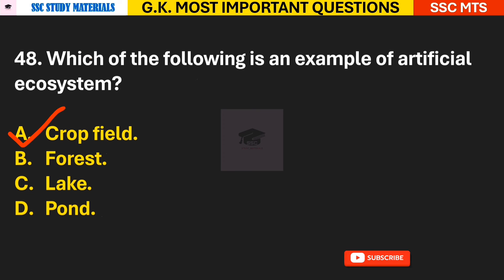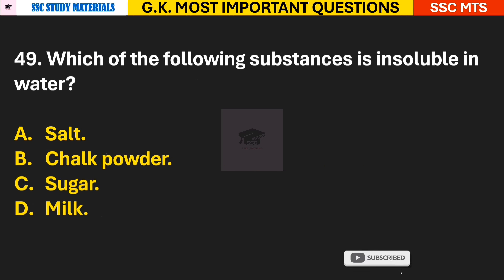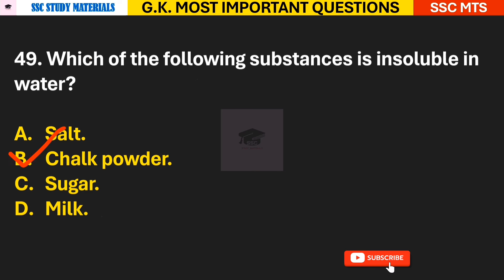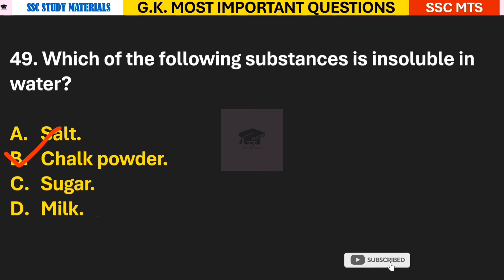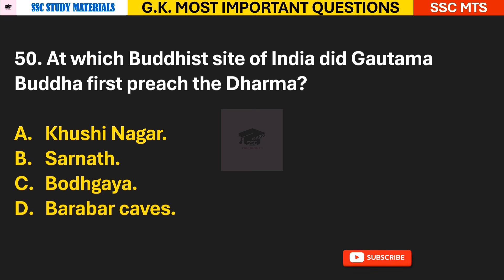Question 48: Which of the following is an example of an artificial ecosystem? Answer A — a crop field is an example of an artificial ecosystem. Question 49: Which of the following substances is insoluble in water? Answer B — chalk powder is insoluble in water. Question 50: At which Buddhist site of India did Gautama Buddha first preach the Dharma? Answer B — Sarnath.